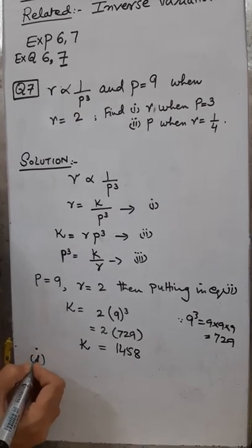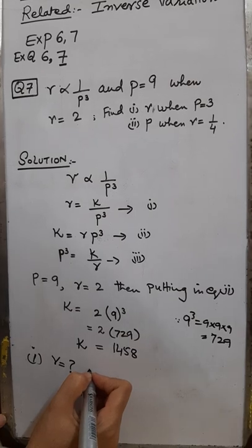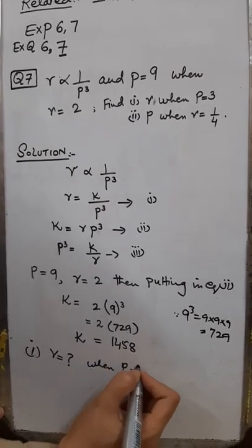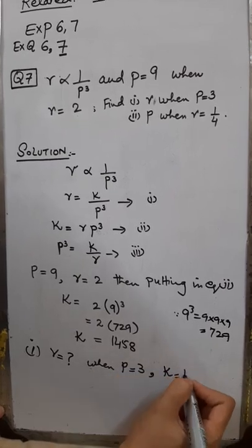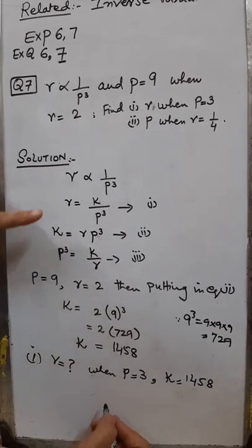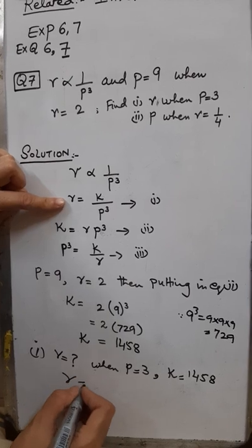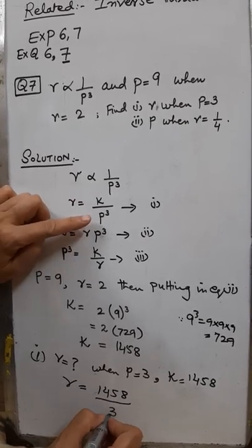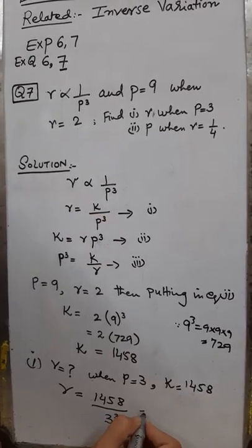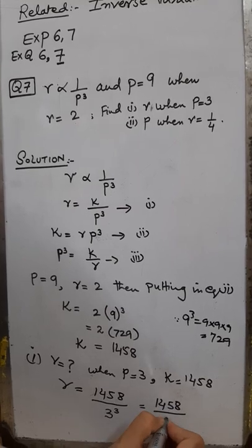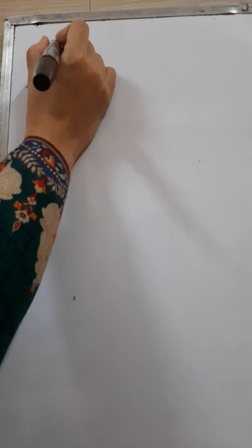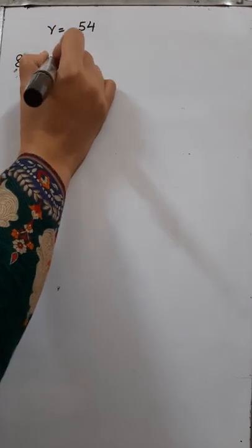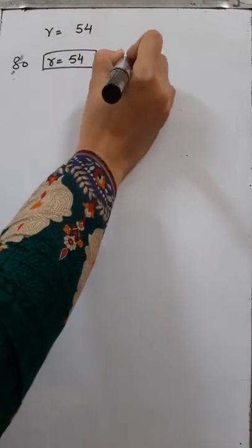Now the constant ratio is known. For the first part, we need to find R when P equals 3 and K equals 1458. Use the first equation: R equals K by P³. Put in the value K = 1458, and since P is 3, take the cube of 3 — which is 3 into 3 into 3, equals 27. Using a calculator, 1458 divided by 27 equals 54. So R equals 54 when P is 3.